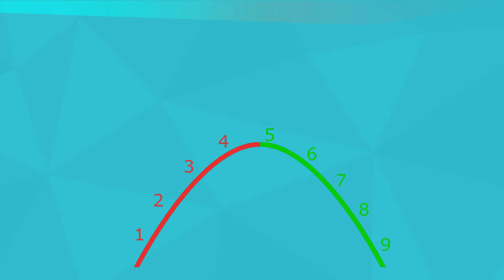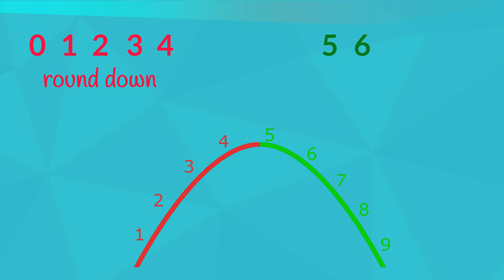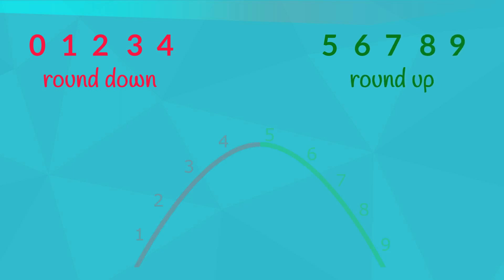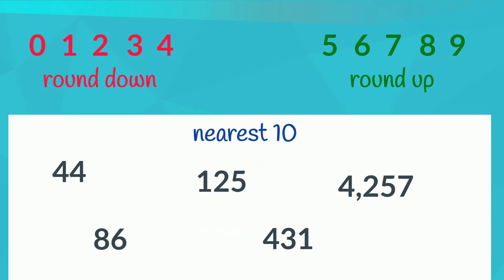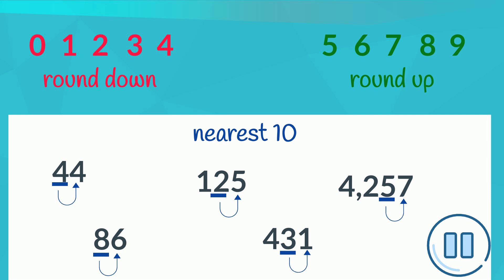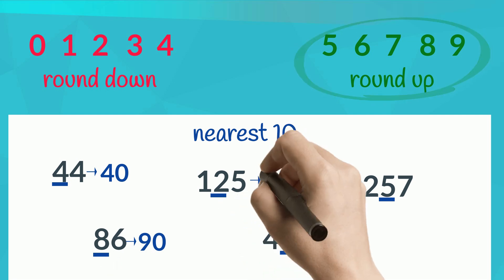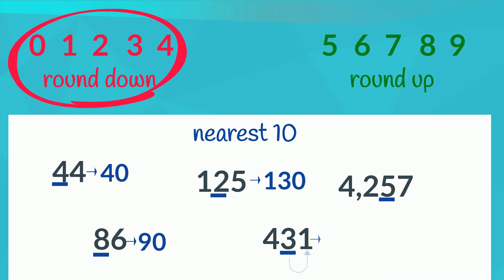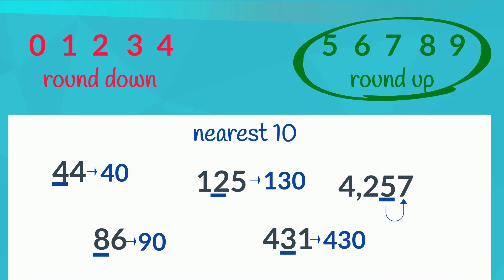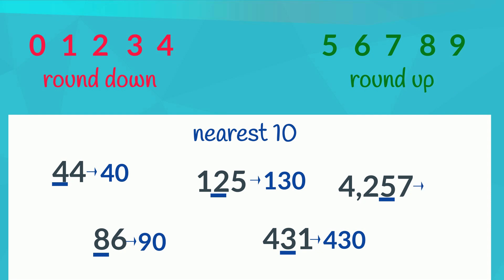If we remember that the numbers 0, 1, 2, 3 and 4 round down, and the numbers 5, 6, 7, 8 and 9 round up, we don't need this visual. Try rounding each of these numbers to the nearest 10. Here are the tens in each number. You'll need to decide whether each number will round down to stay at the same 10, or round up to the next 10. To work this out, look to the digit in the place value to the right — the ones. Pause here while you work. Let's see how you went. 4 rounds down, so 44 rounds down to 40. 6 rounds up, so 86 rounds up to 90. 5 rounds up, so 125 rounds up to 130. 1 rounds down, so 431 rounds down to 430. 7 rounds up, so 4,257 rounds up to 4,260.